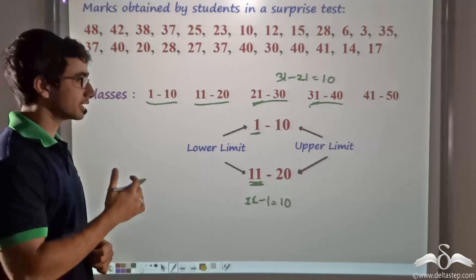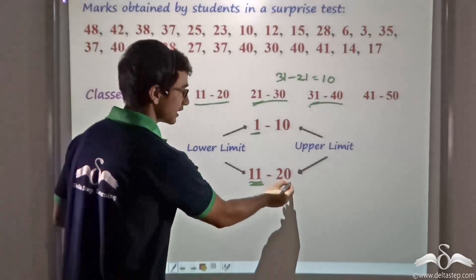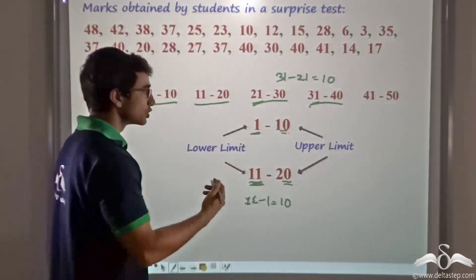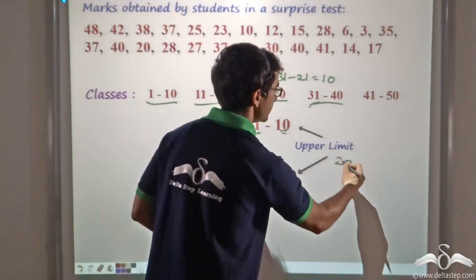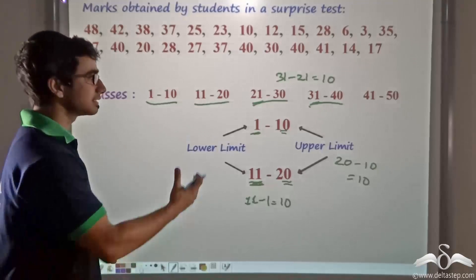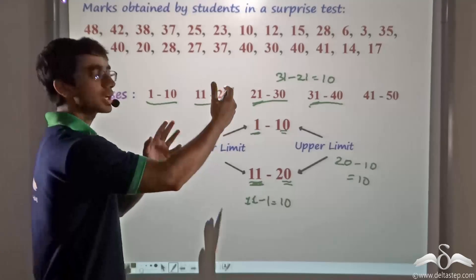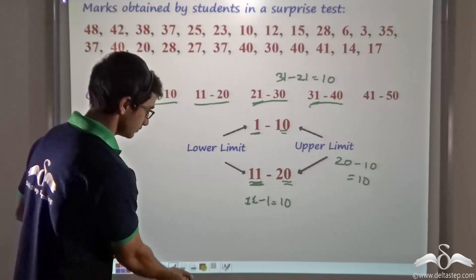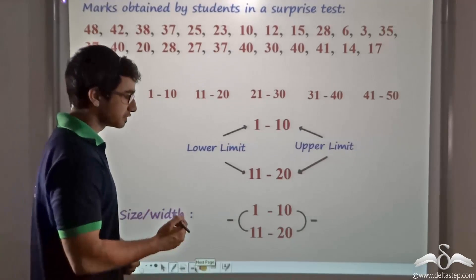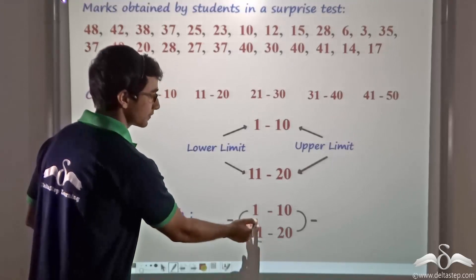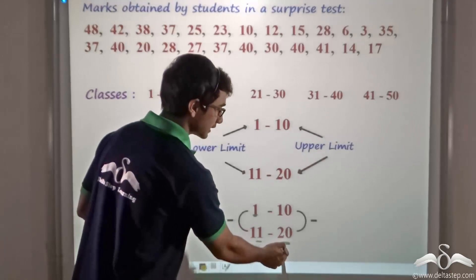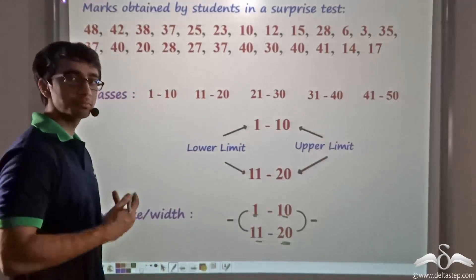It can also be found out in another manner — that is, the upper class limit minus the upper class limit of the previous class. So it will be 20 minus 10, which is again equal to 10, and this will be true for any two consecutive classes we consider. So the class size or class width is given by the difference between the lower limit of one class and the lower limit of the previous class, or the upper limit of one class minus the upper limit of the previous class.